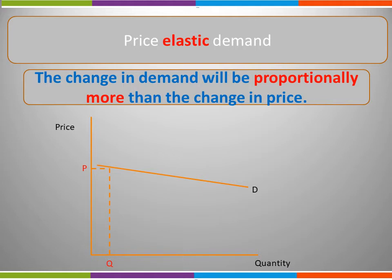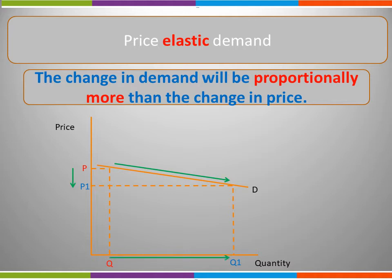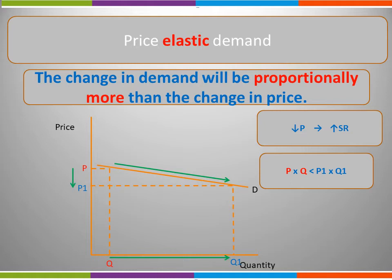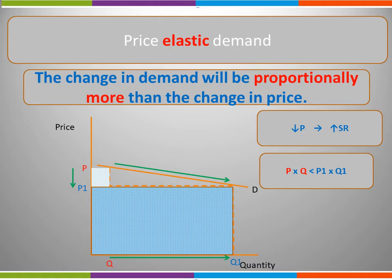If we have a product that has a price elasticity of demand that is elastic, the change in demand will be proportionally more than the change in price. We can see here that the slope of the demand curve is different — it is now only gradual — so as we move from P to P1 the quantity demanded will increase from Q to Q1. A small change in price has led to a significantly larger change in quantity demanded. This shows us that if we were to lower the price of an elastic product there would be an increase in sales revenue — the area P times Q is much smaller than the area of P1 times Q1.